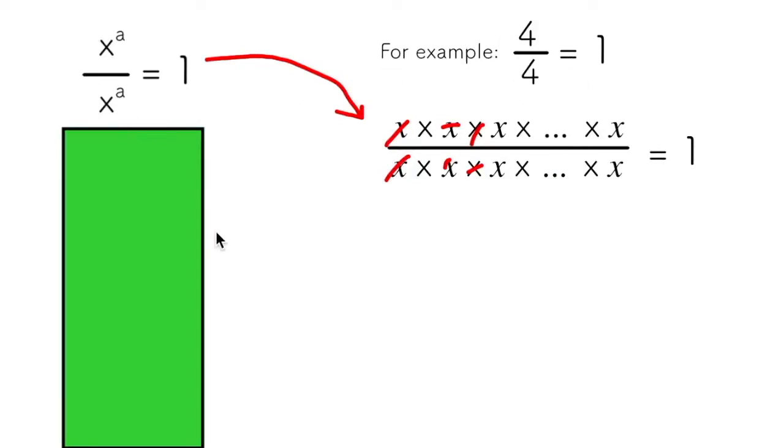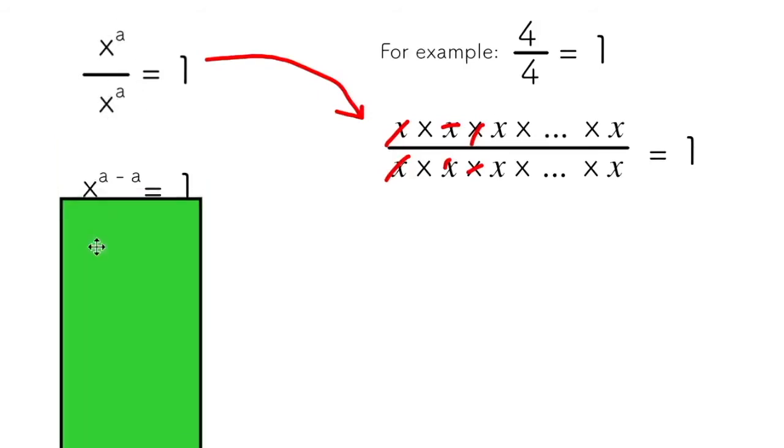What I want to do is take this one step further and go back to the initial problem here of x to the power of a over x to the power of a. What I can do is use my understanding of exponent laws, in particular, the division law for powers of the same base, and I can say that x to the power of a over x to the power of a is the same as x to the power of a minus a.